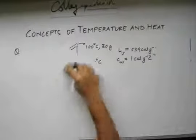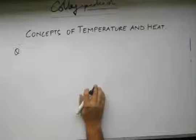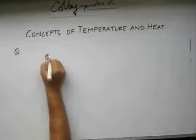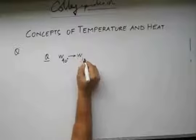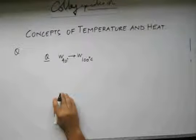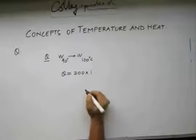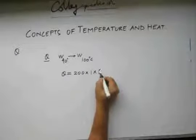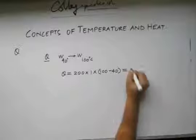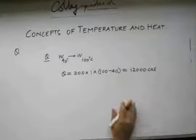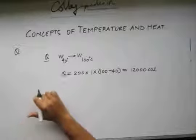Let us assume that q is the amount of heat required to convert the 40 degree Celsius water to water at 100 degree Celsius. This q is going to be 200 grams times the specific heat of water which is 1, times the temperature difference which is 100 minus 40. This is going to be equal to 12,000 calories. This is the amount of heat required to increase the temperature of water from 40 degrees to 100 degrees.